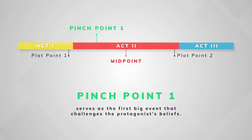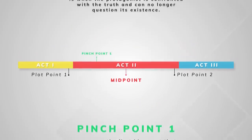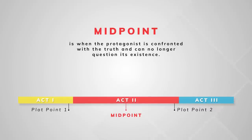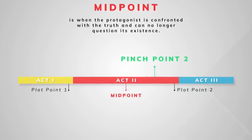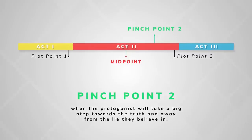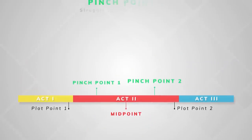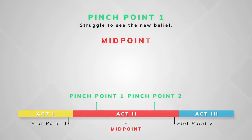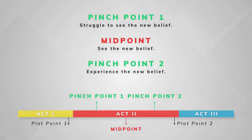The protagonist will have their belief threatened, but they will refuse to change. The midpoint happens halfway through the second act — it is the middle of the story. This is when the protagonist is confronted with the truth and can no longer question its existence. The second pinch point happens in between the midpoint and second plot point, about three quarters into the second act. This is when the protagonist will take a big step towards the truth and away from the lie they believe in. Thus, we can generalize each stepping stone: first pinch point — struggle to see the new belief; midpoint — see the new belief; second pinch point — experience the new belief.